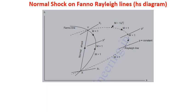We need to use the detail of the Fanoline range. We have to explain the figure in the Rayleigh and Fanoline diagram. We have two points, x and y. The Fanoline represents a thick curve and the Rayleigh line represents a dotted line.